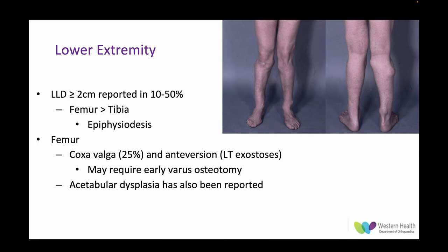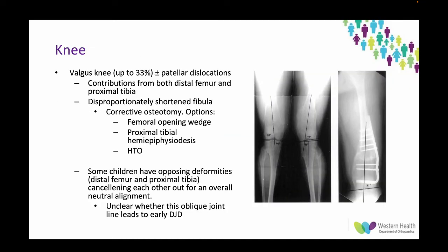The femur has coxa valga in up to 25% and can have anteversion due to a characteristic lesser trochanter exostosis, which may require early varus osteotomy. Acetabular dysplasia has also been reported with acetabular exostosis. At the knee, valgus deformity occurs in up to 33% of cases and can be associated with patella dislocation. It was traditionally thought to occur mostly in the tibia, but we now know it's from both the distal femur and proximal tibia, and on the tibial side it's the disproportionately shortened fibula that drives it.